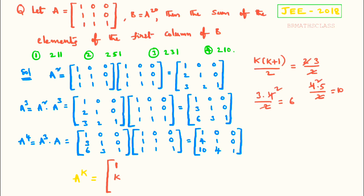So in A power k, this third element is k into k plus 1 divided by 2. With this, I have got all the first column elements of A power k. Not only this — by observing A square, A cube, and A power 4, I can write all the elements of A power k.